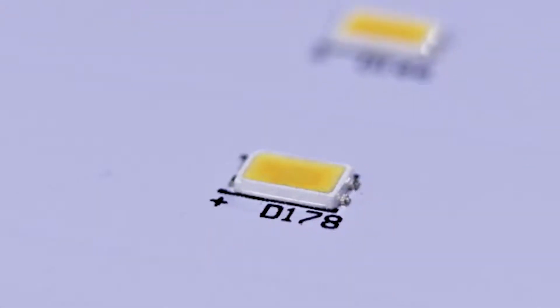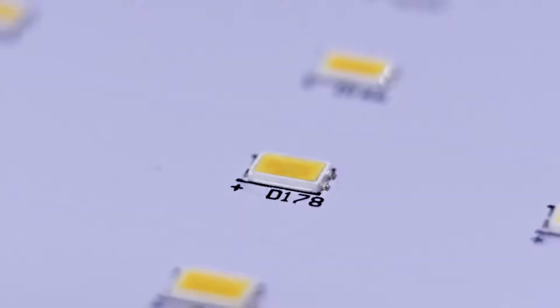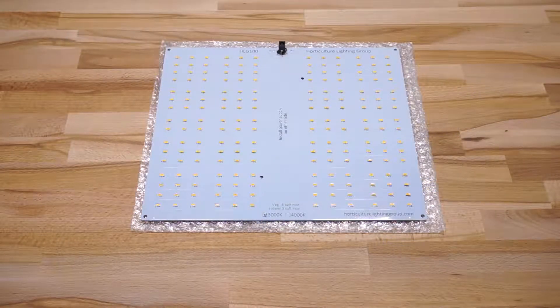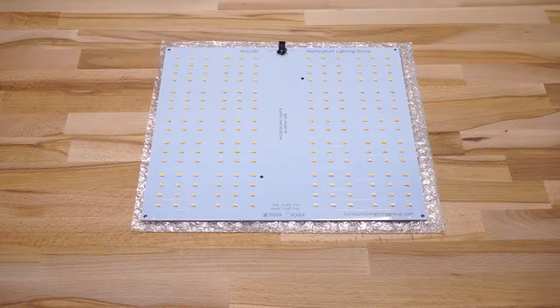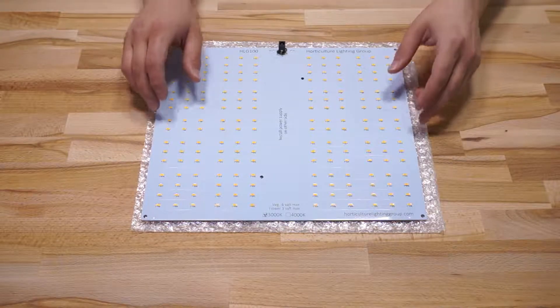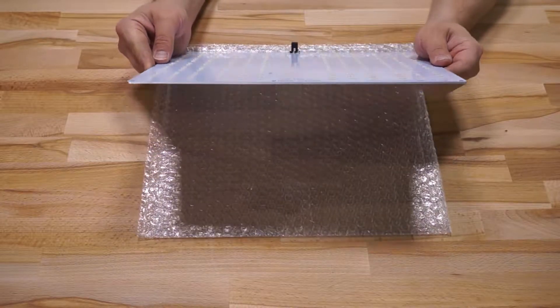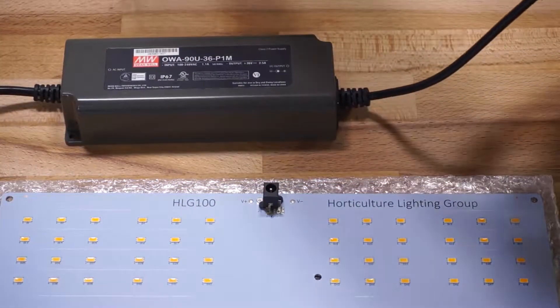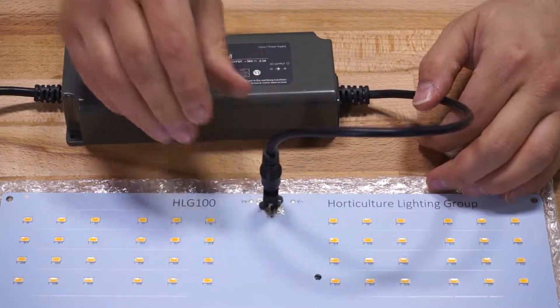The HLG-100 is a PCB that's built with Samsung LM561C S6 bin diodes. It's made up of 16 parallel strings of diodes with each string containing 12 in series for a total of 192 LEDs. The PCB is about a sixteenth of an inch thick and there's a single DC barrel connector on the board that matches with the connector on the included driver.